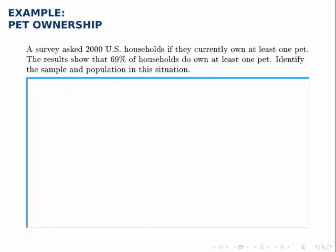Here we'll do a quick example where we identify the sample and the population in a survey. The question asks: a survey asked 2,000 U.S. households if they currently own at least one pet. The results show that 69% of households do own at least one pet. Identify the sample and the population in this situation.